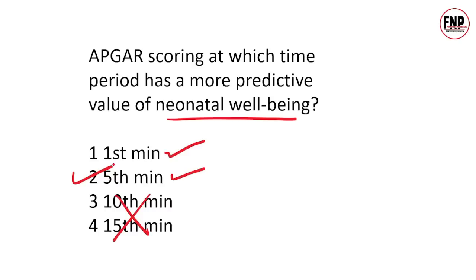APGAR scoring में 5 parameters assess किए जाते हैं: Appearance, Pulse, Grimace, Activity और Respiration। Scoring 0 से 10 तक होती है। 7 से 10 का score — बच्चा good condition में है। 4 से 6 — medical assistance की आवश्यकता है। 0 से 3 — immediately resuscitation perform करना चाहिए क्योंकि बच्चे का survival मुश्किल है।